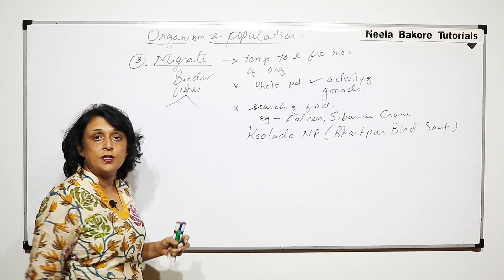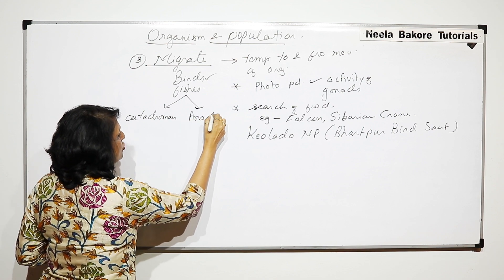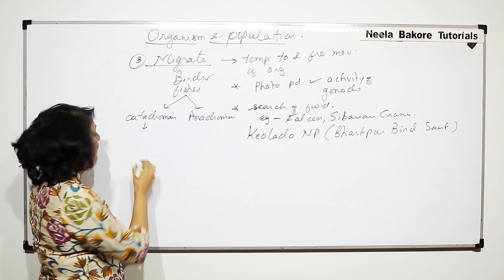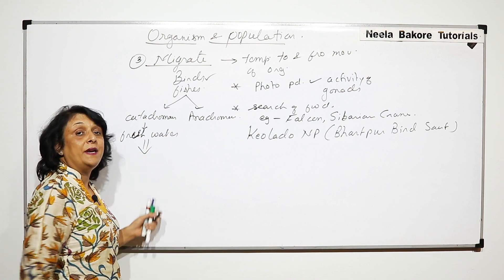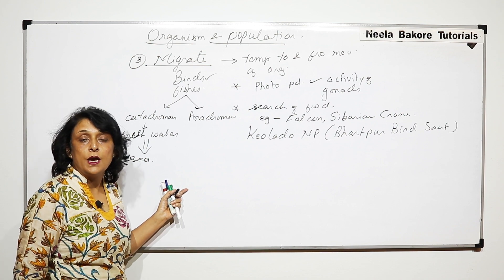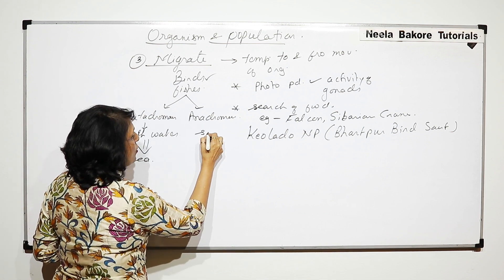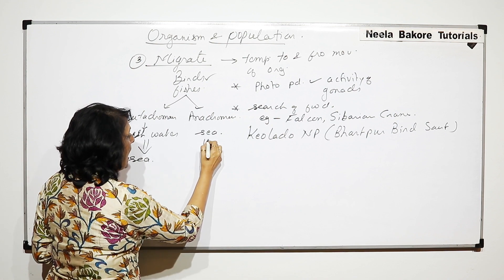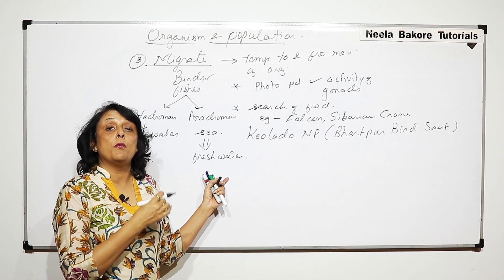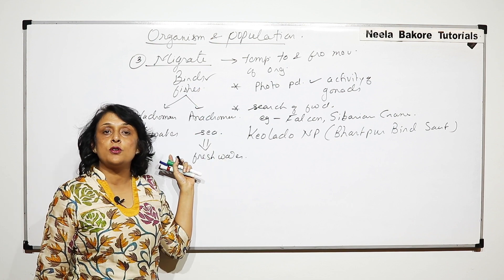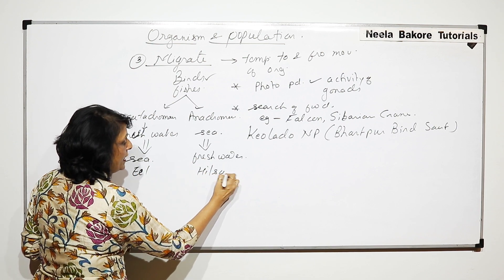When talking about fishes, there are two types: catadromous and anadromous. Catadromous fishes are freshwater fishes that migrate to the sea or ocean for breeding — they go to the ocean, reproduce, and lay their eggs there. Anadromous is just the reverse: they are normally found in the ocean or sea and migrate to fresh water for egg laying. An example of a catadromous fish is the eel, and an example of an anadromous fish is the hilsa.